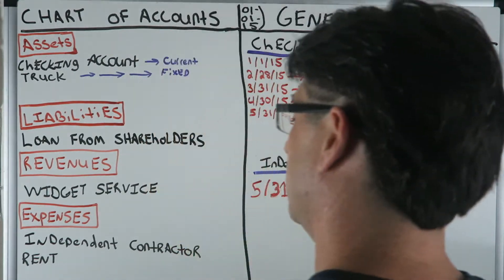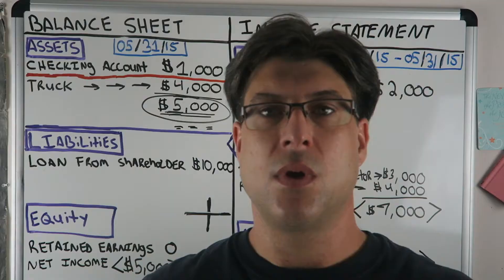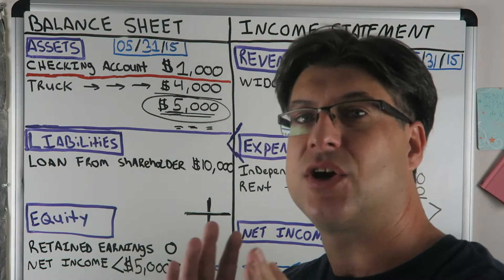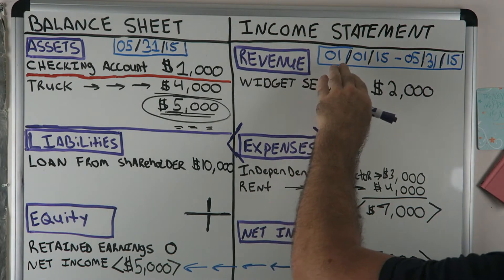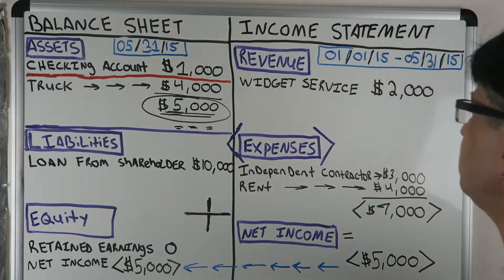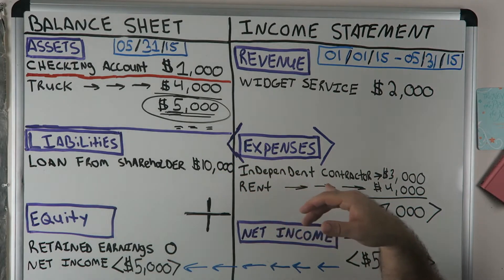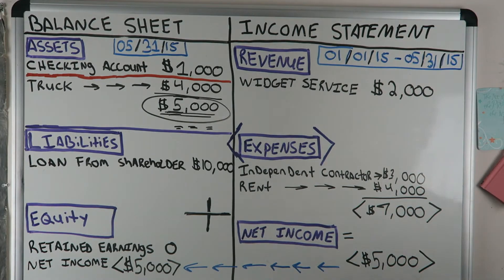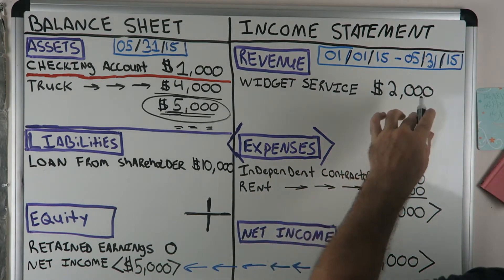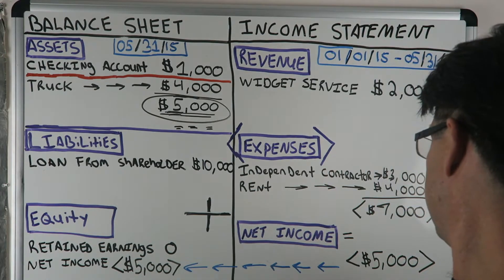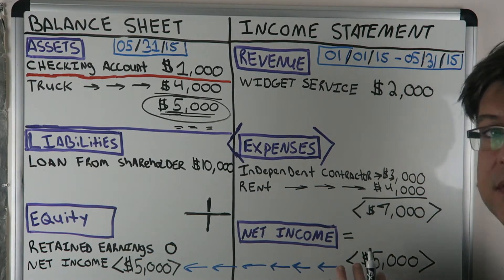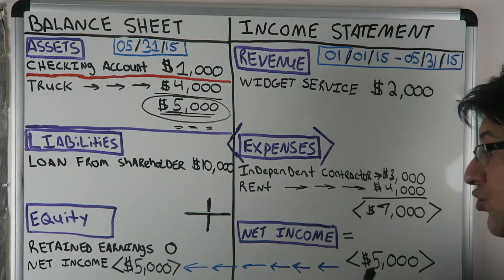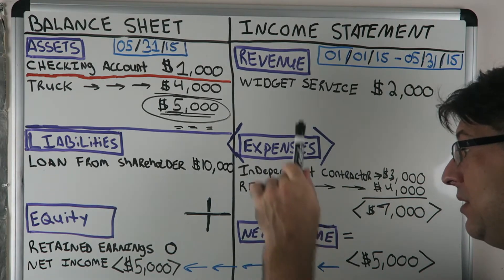Now let's go to the balance sheet and income statement. The income statement runs from 1/1/15 to 5/31/15. In our expenses, we added independent contractor for three thousand dollars, which brings total expenses to seven thousand dollars. Revenue is two thousand dollars. So two thousand minus seven thousand is negative five thousand dollars — that's our net income for the period so far. Revenues minus expenses equals net income: negative five thousand dollars. That net income transfers from the income statement over to the balance sheet under equity.